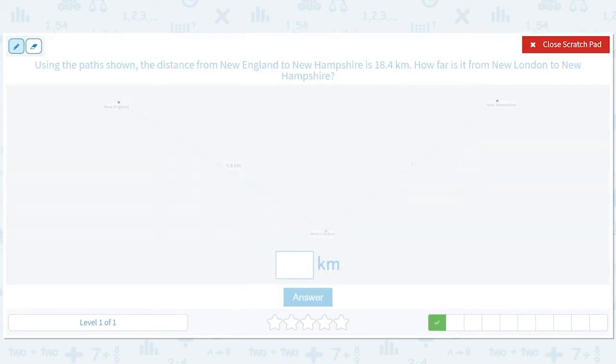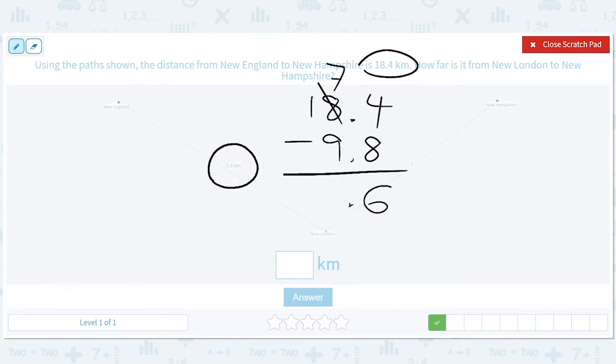So the whole thing is 18.4. This piece is 9.8. So the question mark is 18.4 minus 9.8, which will be 8.6.